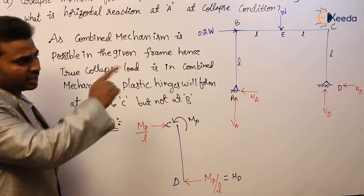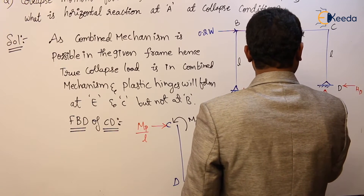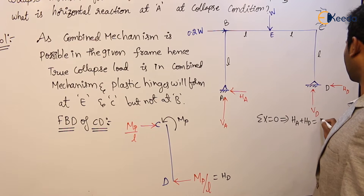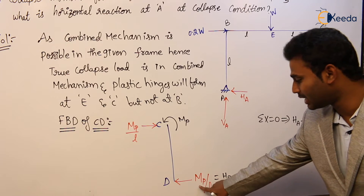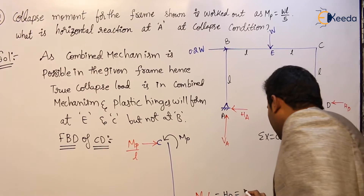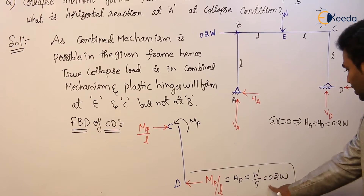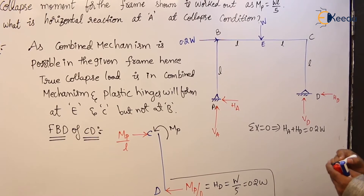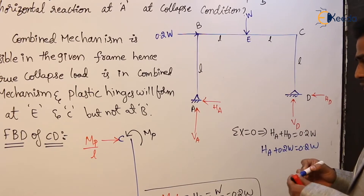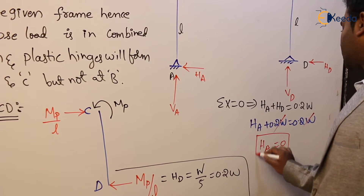From the equation of equilibrium, sigma_x = 0, we get HA + HD = 0.2W. We just calculated HD = MP/L. Since MP = WL/5, substituting gives HD = (WL/5)/L = W/5 = 0.2W. Substituting into the equilibrium equation: HA + 0.2W = 0.2W. The 0.2W terms cancel, giving HA = 0. This is the answer.